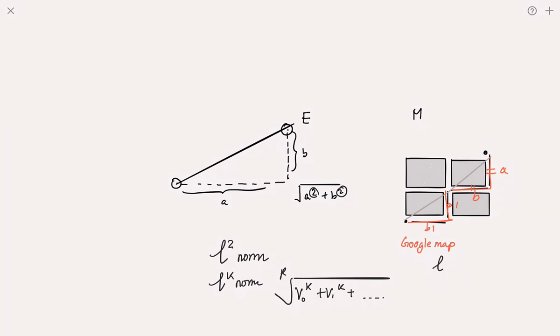You can think of this as the L1 norm, because your a plus b is essentially a to the first power, b to the first power, and to the 1 over 1 power.